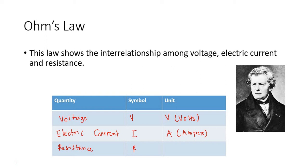Lastly, we have resistance. Resistance is represented by capital letter R, but its unit is a little different because we are going to use a Greek letter — omega — which is read as ohms.